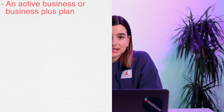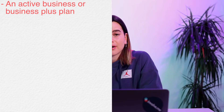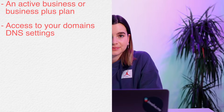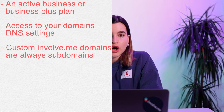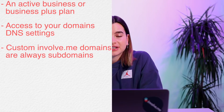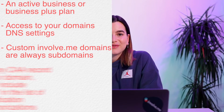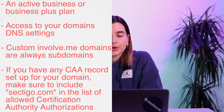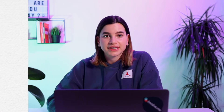The prerequisites to set this up are an active business or business plus plan on involve.me and access to your domain's DNS settings. Custom involve.me domains are always subdomains — for example, subdomain.mydomain.com. If you have any CAA records set up for your domain, make sure to include sectigo.com in the list of certification authority authorizations, otherwise the custom domain cannot be activated.